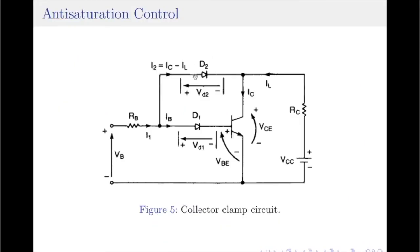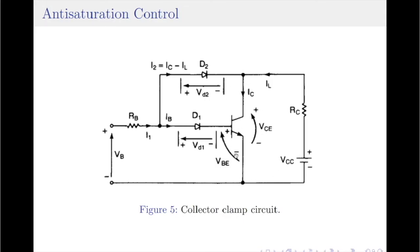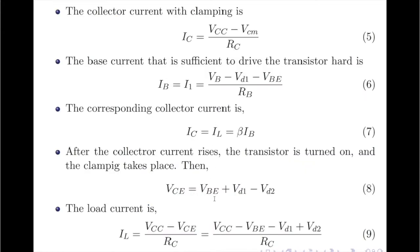Please note: in the absence of diode D2, the collector current equals the load current, and therefore IC = IL = β × IB. Once the collector current starts to rise, the transistor is set to be turned on. Once the transistor turns on, the collector current starts to rise and clamping takes place because now diode D2 will be forward biased. The collector-to-emitter voltage is now given by VCE = VBE + VD1 − VD2.